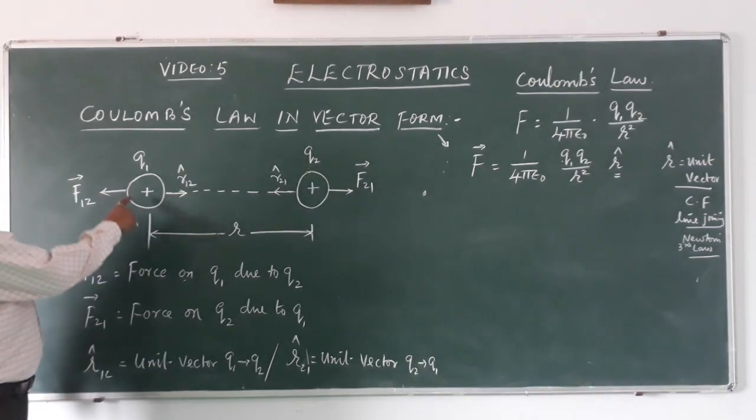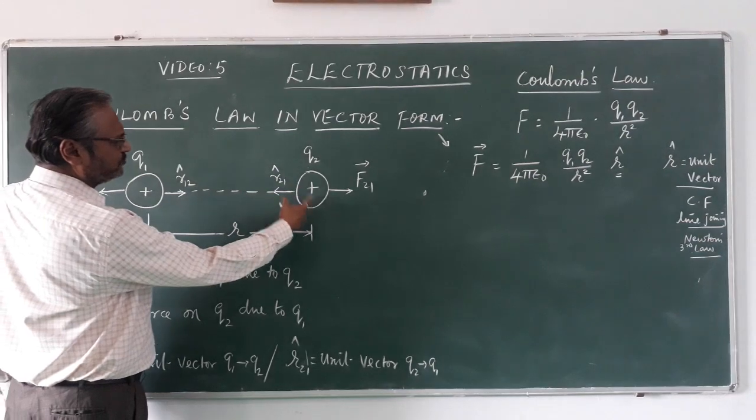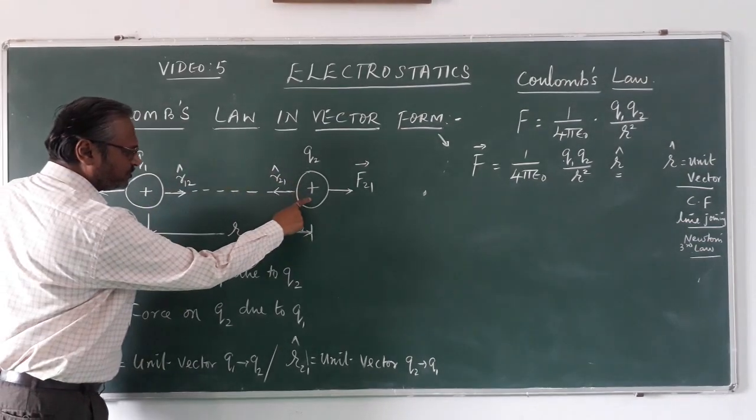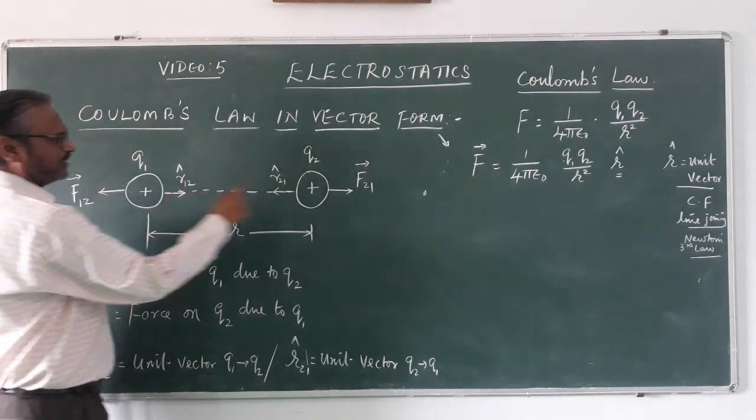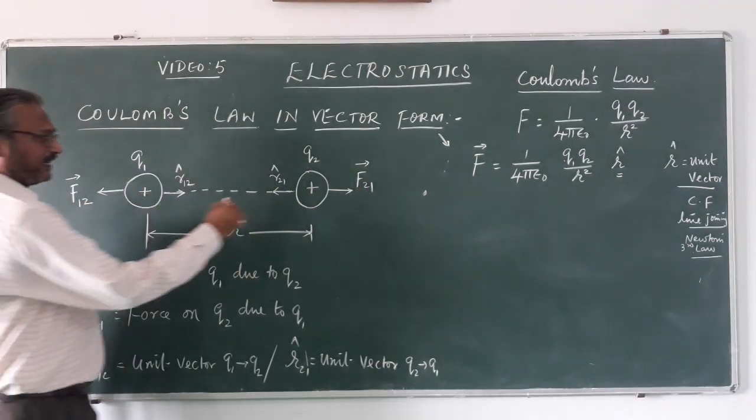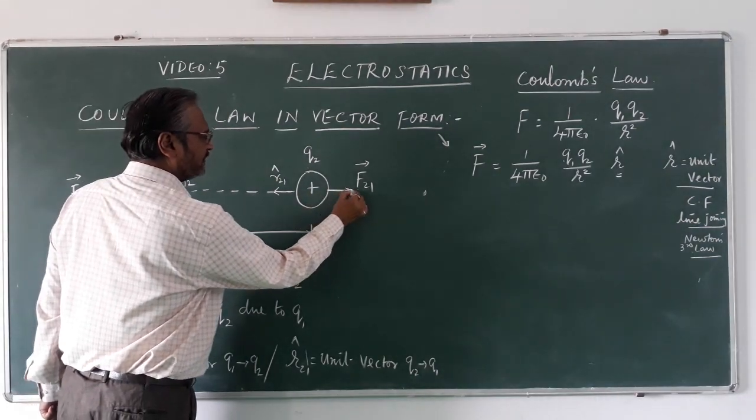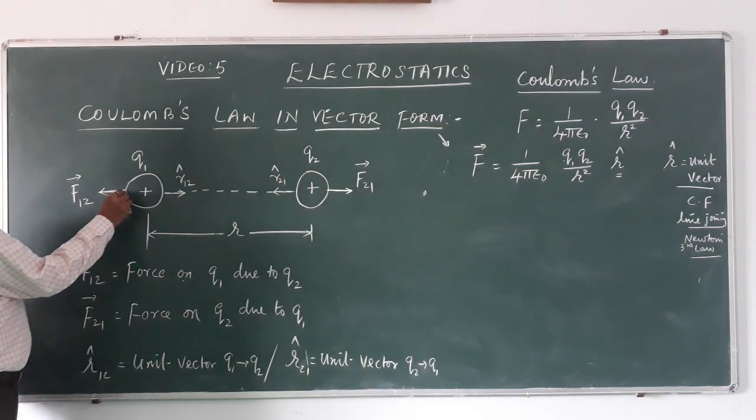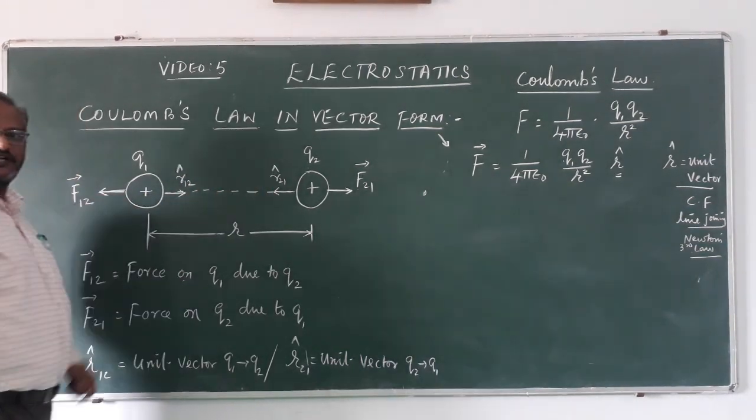Secondly, similarly this charge is going to influence this charge. Now what is the force? On the second charge due to the first charge, you call it as F₂₁. I have taken the direction towards this side because it is a repulsive force, and I have taken here also because they both are like charges so they are repelling each other.